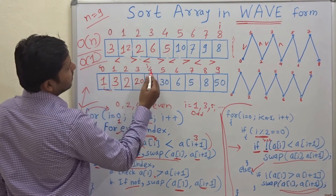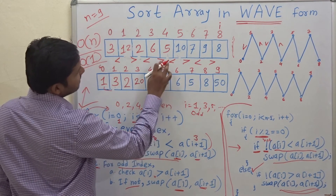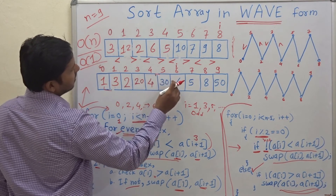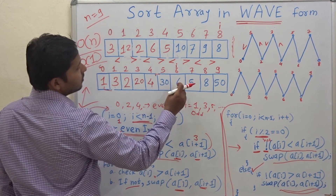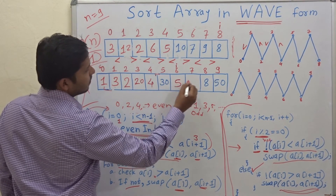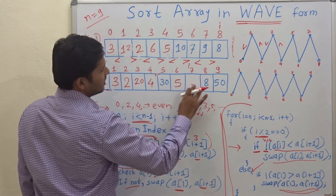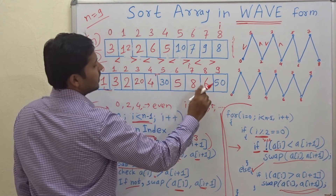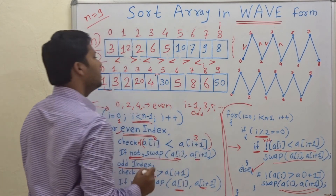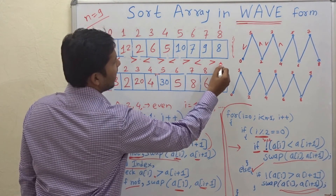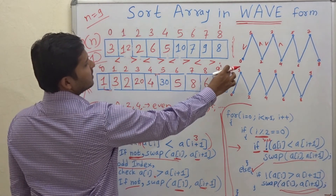Increment i to 4 (even): check whether 4 is less than 30 — yes, no action. Increment to i=5 (odd): check whether 30 is greater than 6 — yes, no action. Increment to i=6 (even): check whether 6 is less than 5 — no, so swap. Increment to i=7 (odd): check whether 6 is greater than the next element — no, so swap. Increment to i=8 (even): check whether 6 is less than 50 — yes, no action. This is the last valid index, so we exit the loop.